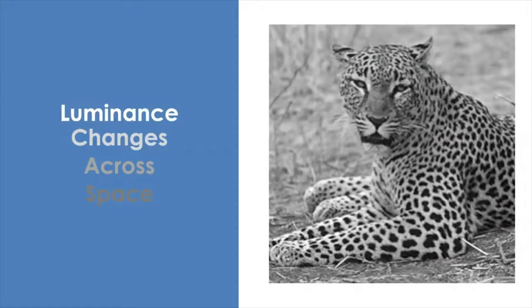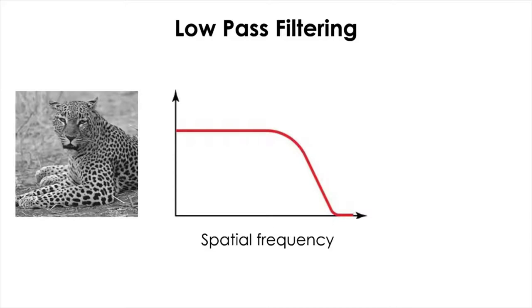In a natural scene or image, objects are distinguishable from each other and from their surroundings by the different variations in light and color that they reflect. Even without color information, like a black and white picture of a cat, the variation in luminance alone can convey complex spatial structures. Using a process called spatial filtering with Fourier analysis, we can extract more detailed spatial information by analyzing how luminance changes across space in an image.